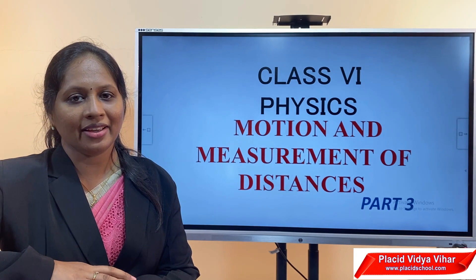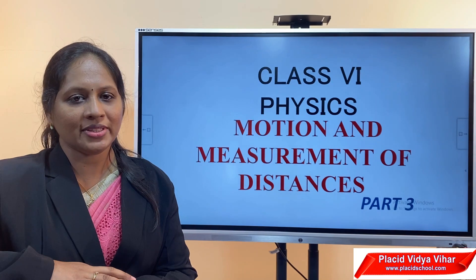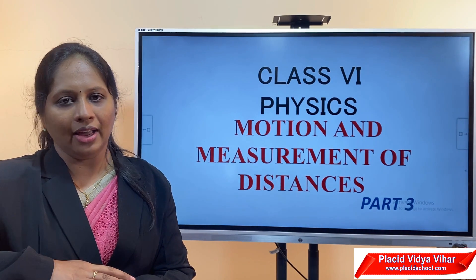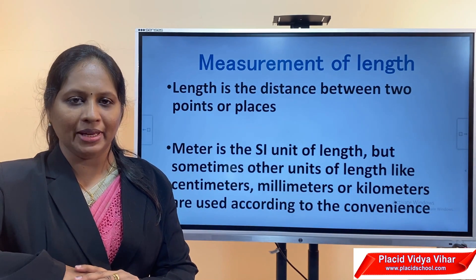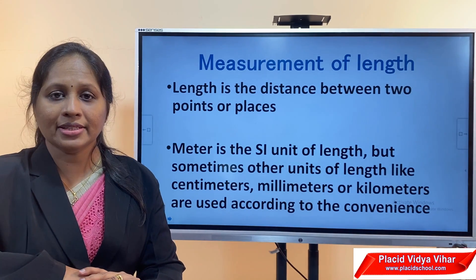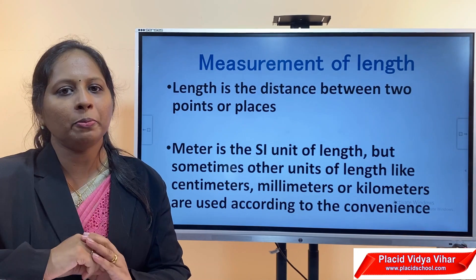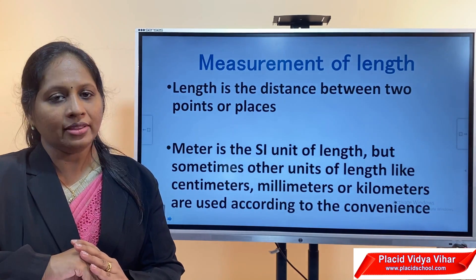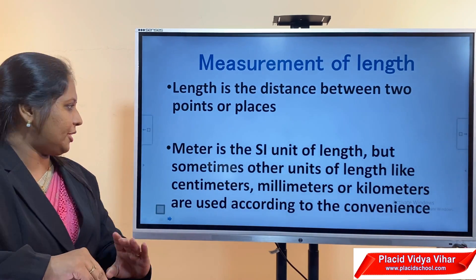Today we are going to see how the measurement of length is done accurately. We know that the SI unit of length is meter. By measurement of length, we mean the distance between two points or between two places. But when we measure length, we also use multiples and submultiples of meter.